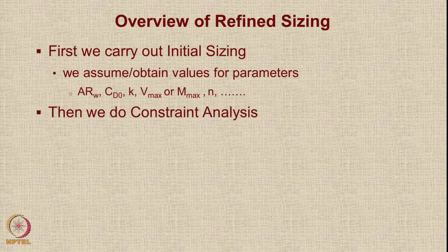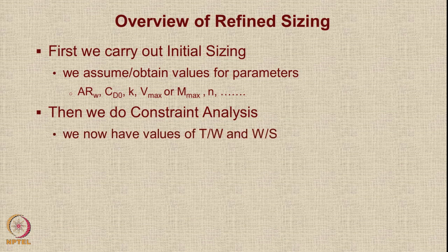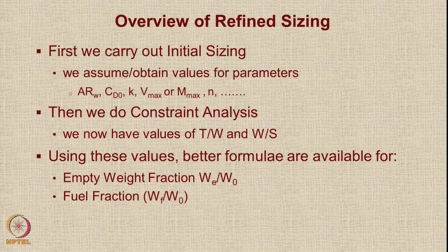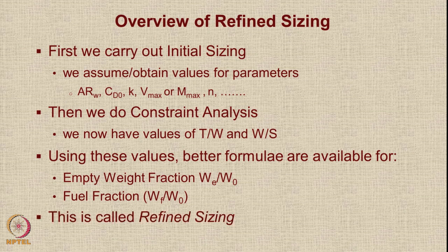Since we know the values of various constraints imposed, we can do constraint analysis. Through that we can get the limiting value of thrust-to-weight ratio, or power-to-weight ratio if it is a turboprop or piston-prop powered aircraft, and W/S, the wing loading. After this, what we should do is improve our estimates because now we can apply better formulae for estimation of parameters such as the empty weight fraction and the fuel fraction. This procedure, using refined formulae for sizing because we now know T/W and W/S, is called refined sizing.